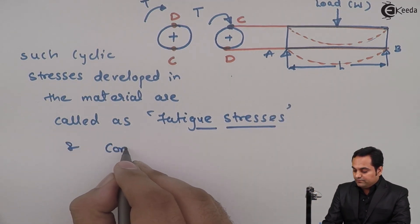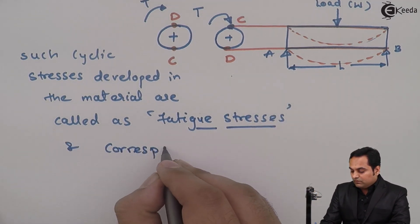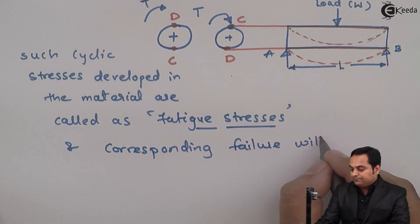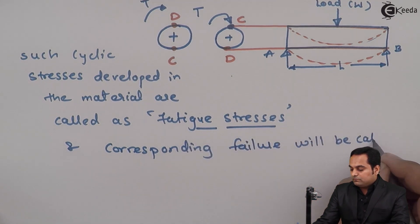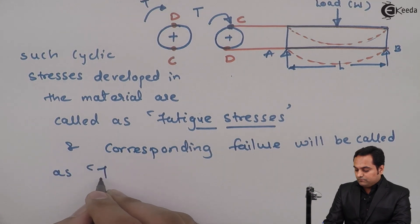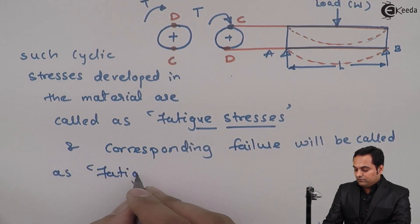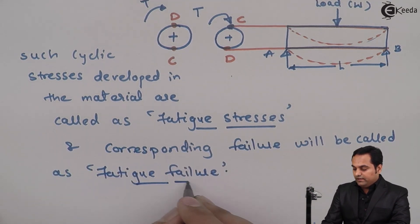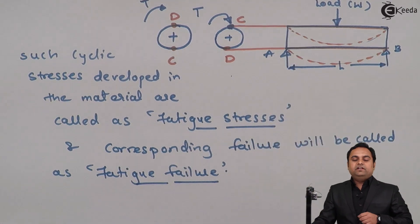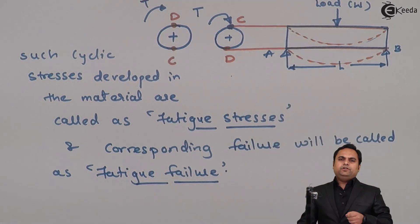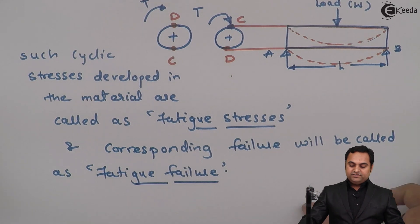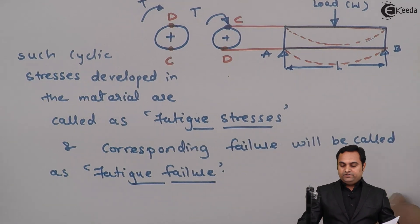The corresponding failure is called fatigue failure. The shaft will fail at a stress value which is less than the maximum stress — that is the fatigue failure. Next, we will draw some graphs.